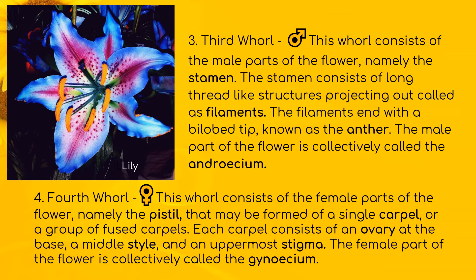The third whorl consists of the male parts of the flower, namely the stamen. The stamen consists of long thread-like structures projecting out called filaments. The filaments end with a bilobed tip known as the anther. The male part of the flower is collectively called the androecium.